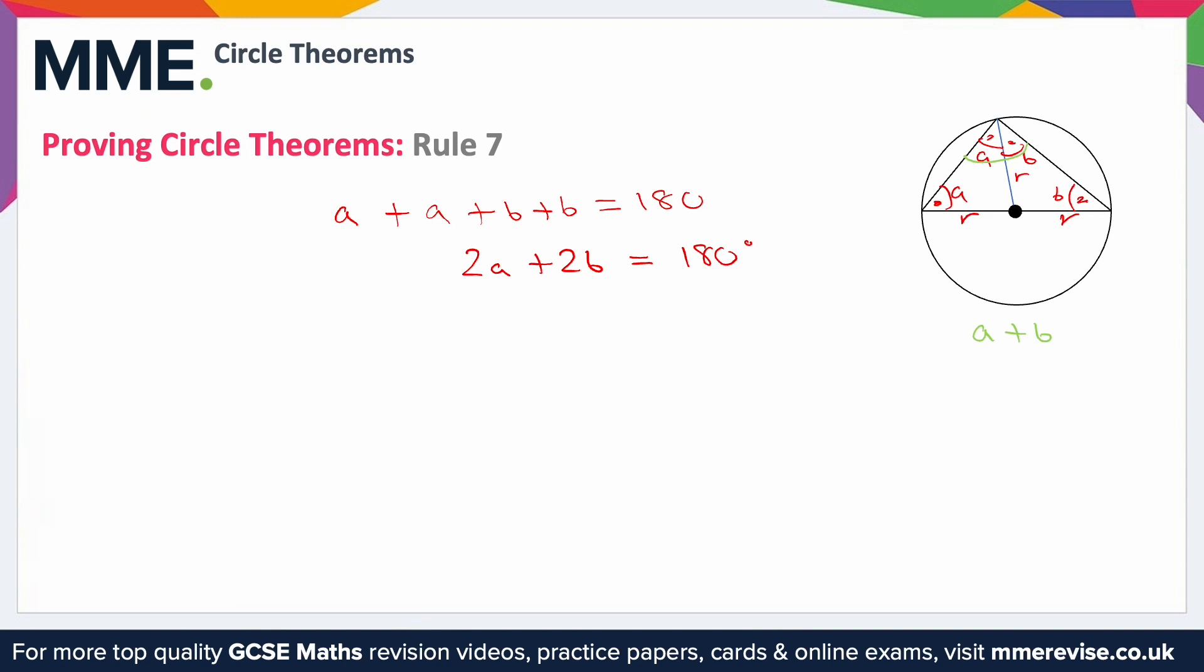Well, from this equation we've got 2a plus 2b, we want just a plus b, so let's divide the equation by 2. And of course we're going to do that to both sides. 2a divided by 2 is going to be a, 2b divided by 2 is going to be b, and then 180 divided by 2 is going to be 90.